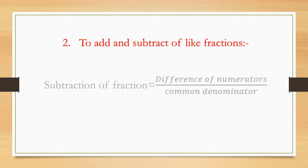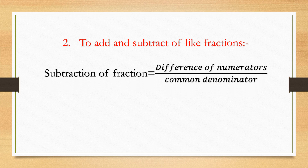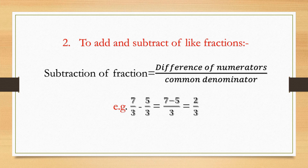For subtraction of like fractions: take the difference of numerators and divide by the common denominator. Again, since the denominator is the same, write it only once. Example: seven by three minus five by three — common denominator is three, seven minus five equals two. Answer: two by three.